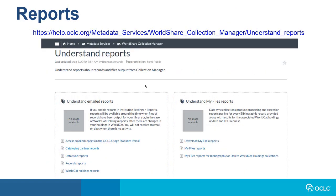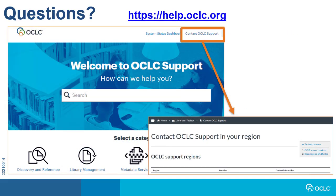Detailed explanation of the different types of reports, as well as how to access these reports, can be found at the Help page Understand Reports. If you need additional help, please visit https://help.oclc.org for documentation, training, and contact information for OCLC support in your region. Thanks for watching.